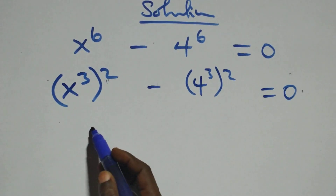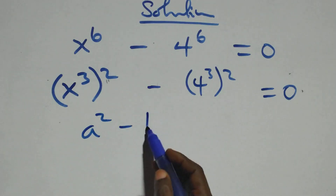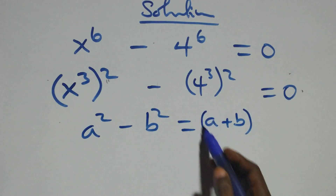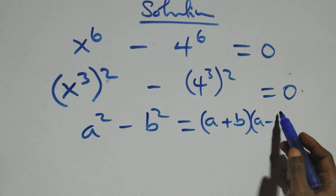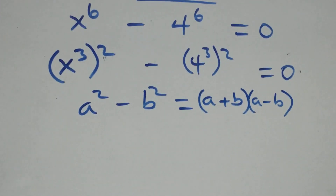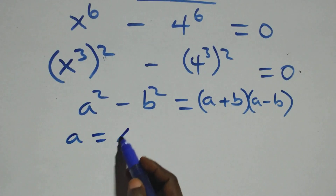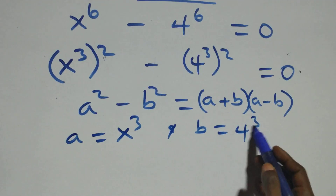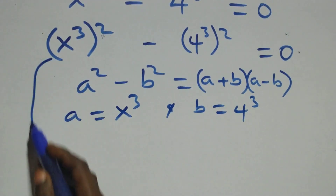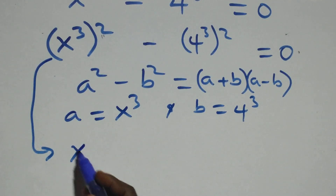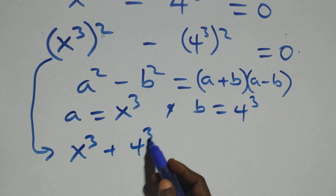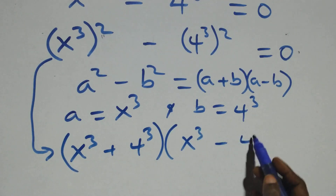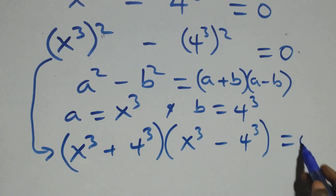This follows from a squared minus b squared, which is the same thing as (a + b)(a - b). Here, a is standing as x cubed and b is standing as 4 cubed. So this equation becomes (x³ + 4³)(x³ - 4³) = 0.